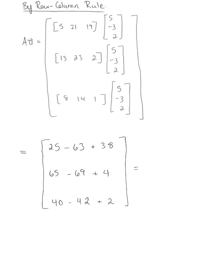And when we add these up, we see the first row is 0, the second row is 0, and our third row is 0. So we're left with the zero vector.